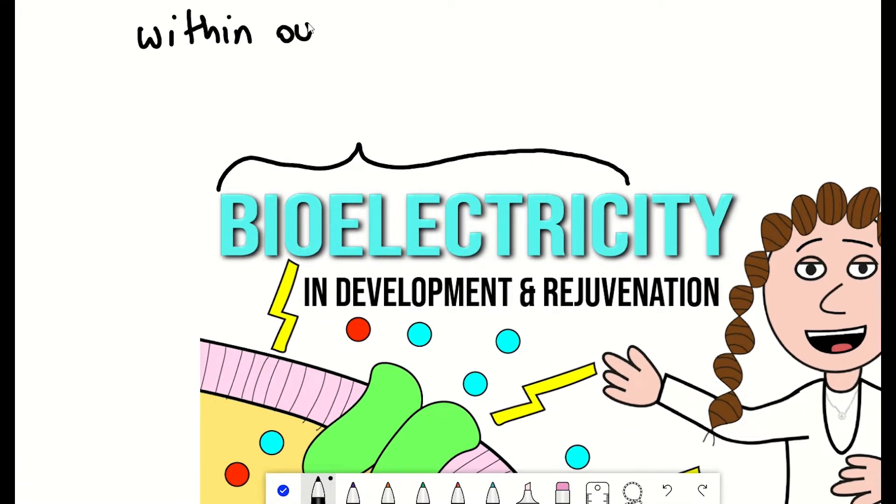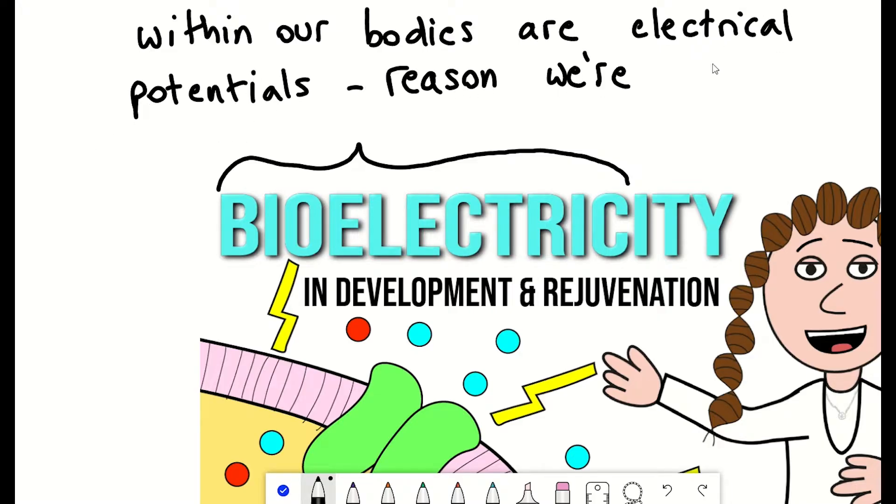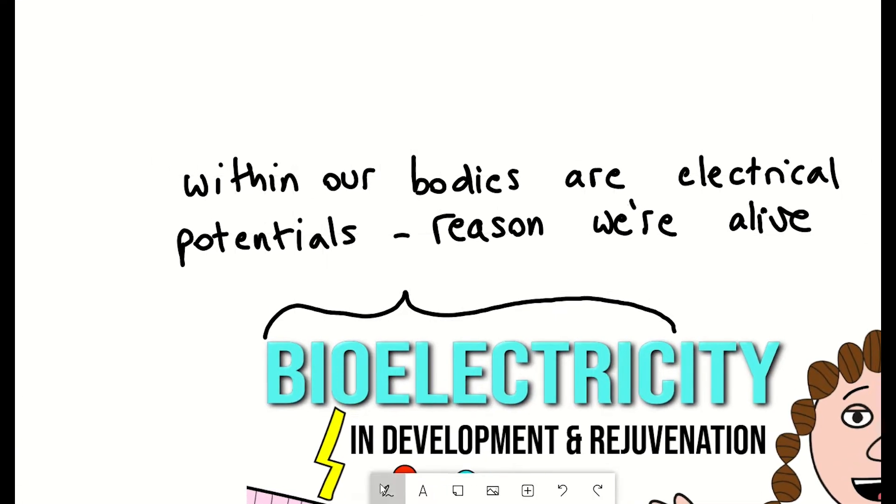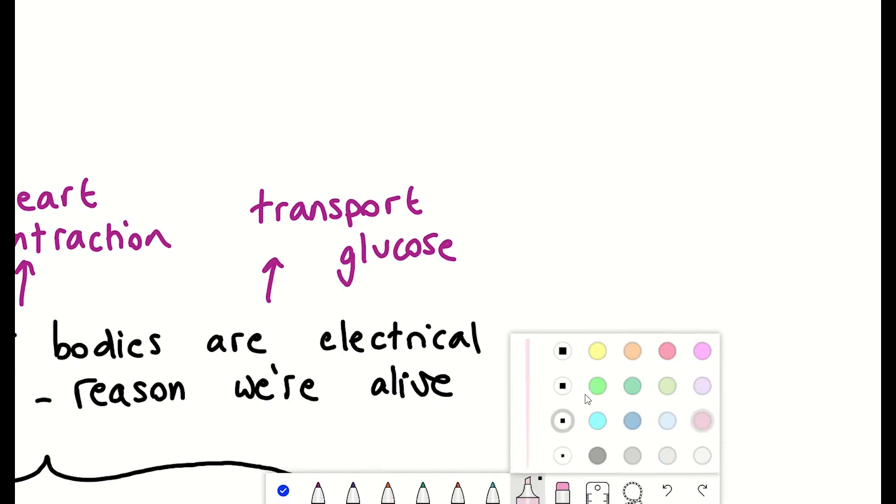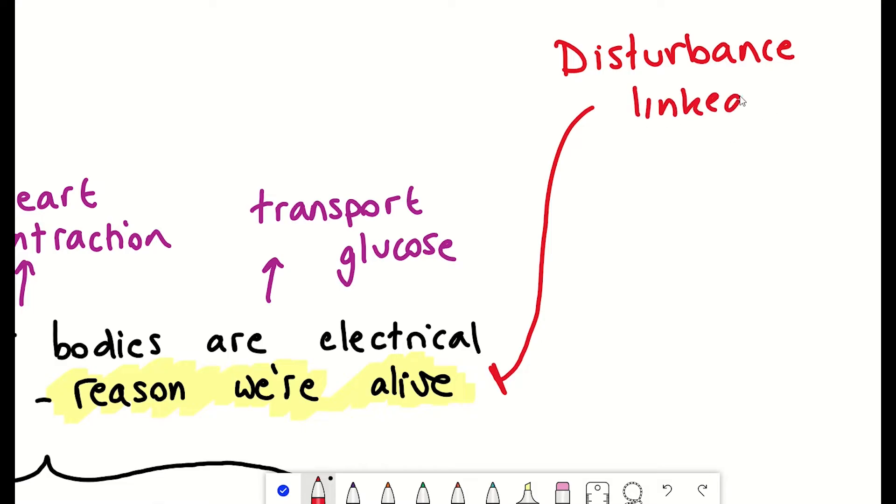Within our bodies are electrical currents and electrical potentials generated by cells that make up our bodies. In fact, it's the reason we're alive. It's involved in neuronal signaling in our brains, enables our heart muscles to contract and transport glucose, to name a few. Disturbance of this electrical signaling has been implicated in many pathophysiological conditions, including cancer, diabetes, and heart failure.